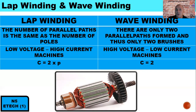For a wave wound armature there are only two parallel paths formed and thus only two brushes. It is used for high voltage and low current applications, and the number of parallel paths is always equal to two for wave winding.